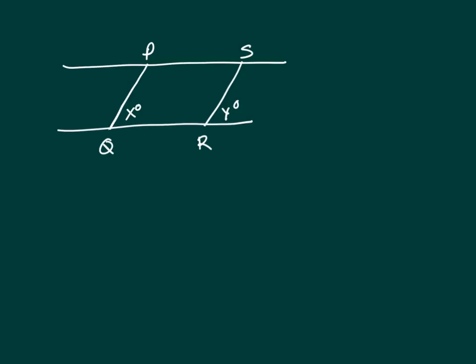All right, we know that X and Y are both less than 90, and we know that PS is parallel to QR, and we're trying to figure out if PQ, the length of PQ, is less than SR.